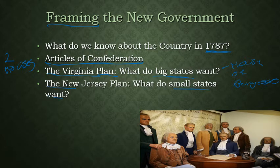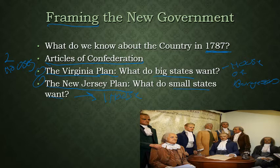You also have the small states plan, also referred to as the New Jersey Plan — it's important to know both names. The small states simply want one house, keeping things more as they are with equal representation, but they want to establish a stronger, more centralized national system of taxation and commerce — addressing the key weaknesses of the Articles of Confederation.